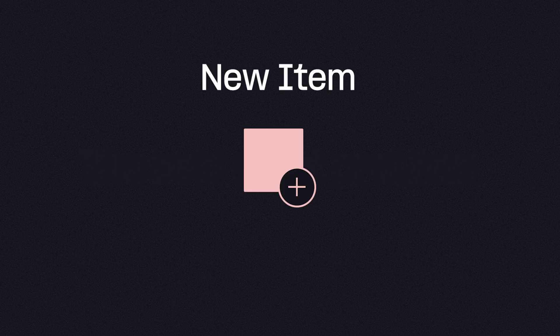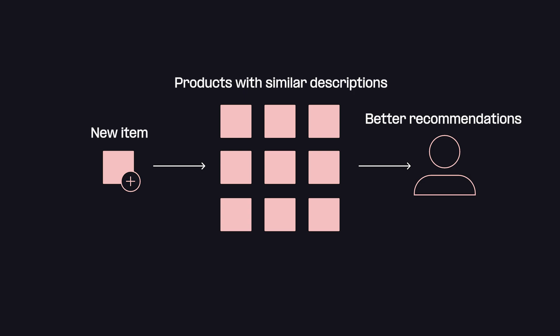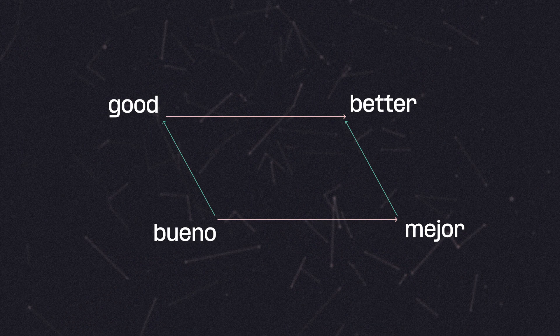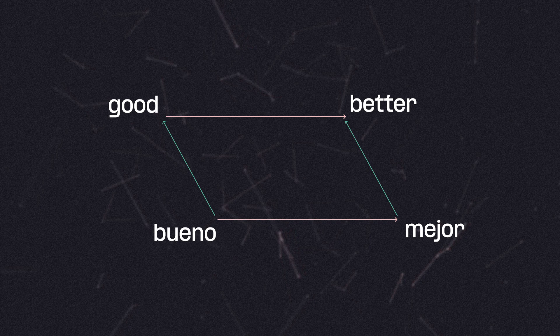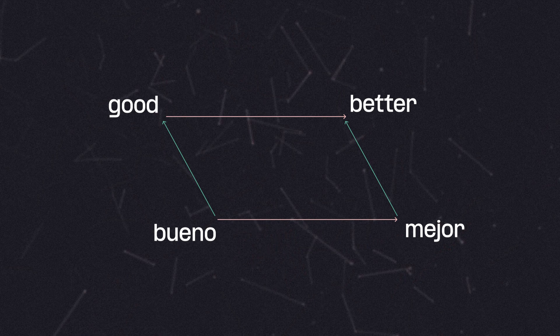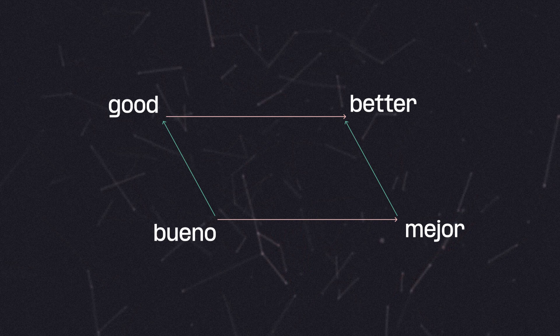A problem that some recommendation engines deal with is called the cold start problem. This is when the model struggles with new items that have little user interaction data. Word2Vec can improve these recommendations by using the description of the product or its features, rather than waiting for someone to purchase it. Because Word2Vec understands word relationships, it can improve translating between languages. It finds how words from different languages are used in similar contexts, making translation less direct and based more on the context of words.